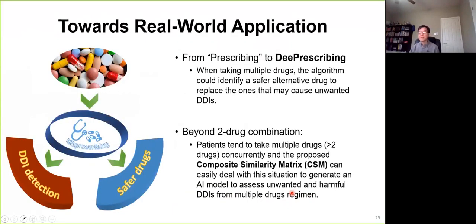So towards real-world applications, we put a lot of thought. Here I'll just give you two examples. First, from prescribing to deep prescribing. Actually, when we take multiple drugs, these models allow you to identify a safer alternative drug to replace the ones that may cause unexpected DDI. And also in real-world applications, most of the time we take multiple drugs, more than two drugs. And our model allows you to easily use our proposed CSM to adjust the descriptors, which allows you to detect numerous and harmful drug-drug interactions from the multiple-drug regimen.